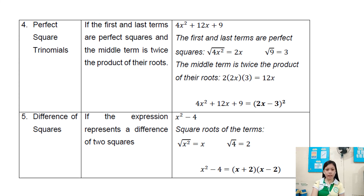Method 4: perfect square trinomials. This is applicable if the first and last terms are perfect squares and the middle term is twice the product of the roots. For example, 4x squared plus 12x plus 9: 4 is a perfect square of 2, and 9 is a perfect square of 3, and the middle term is 2 times 2x times 3 equals 12x. So the factored form is 2x plus 3 squared.